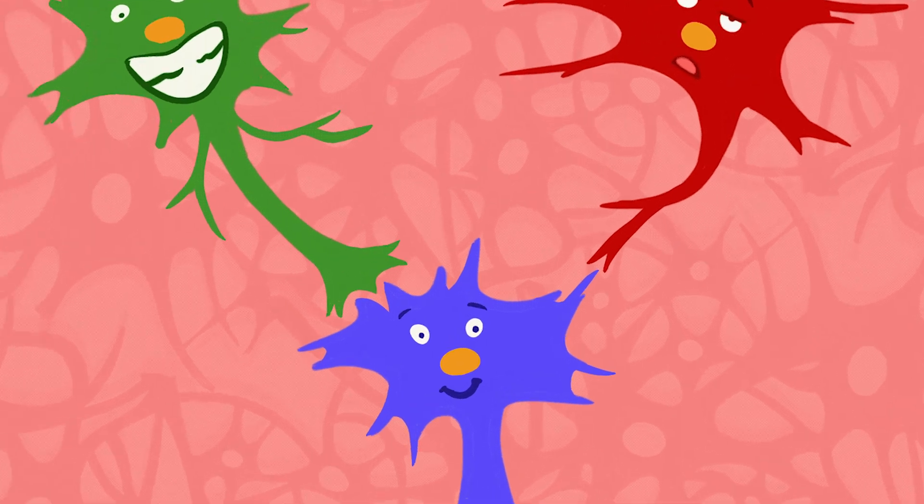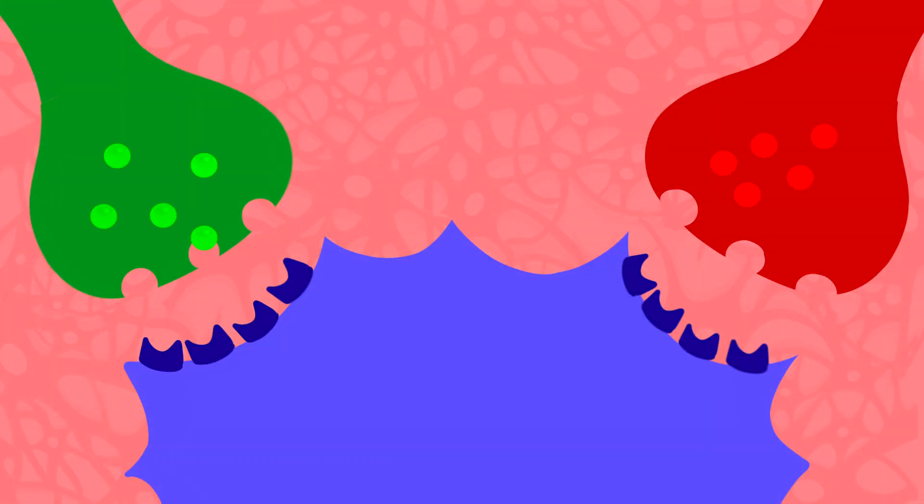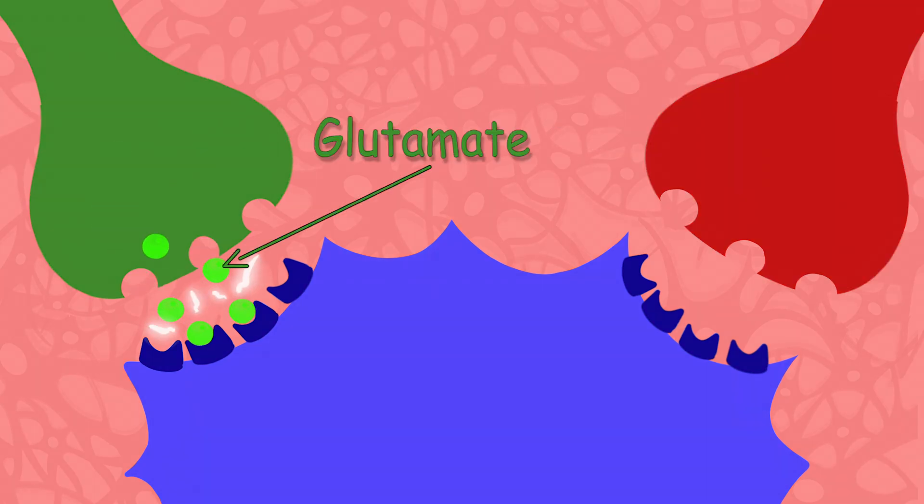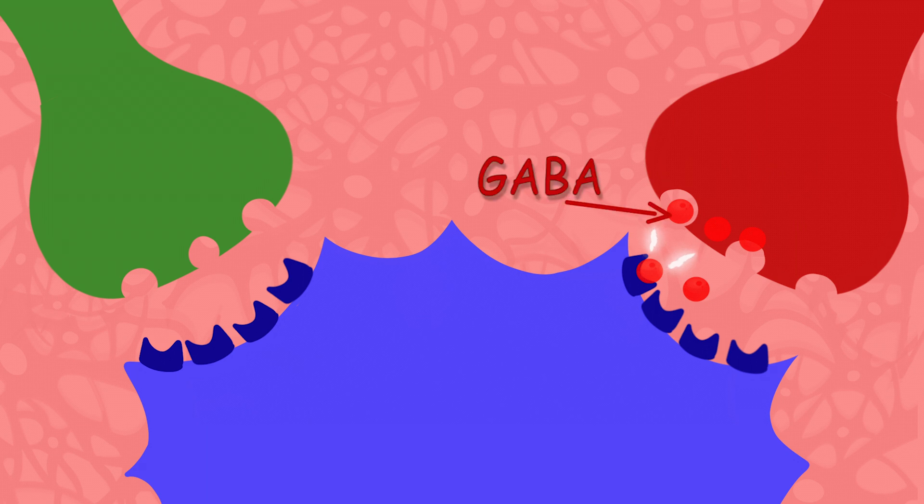Neurons in the brain communicate with each other through chemicals known as neurotransmitters. And so, the excitatory neurons release excitatory neurotransmitters as glutamate, while the inhibitory neurons release inhibitory neurotransmitters as GABA.